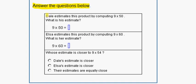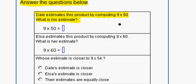First, Dale estimates this product by computing 9 times 50. What is his estimate? So if we work out Dale's estimate, we get 50 times 9 equals, 9 times 0 is 0, and 9 times 5 is 45. So Dale's estimate is 450.